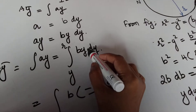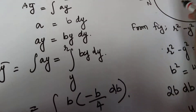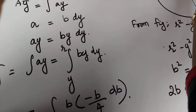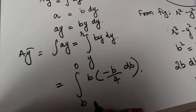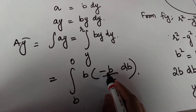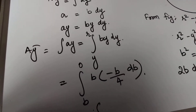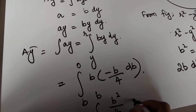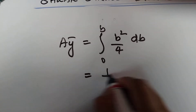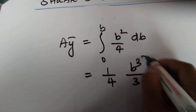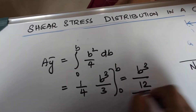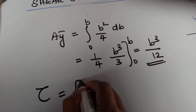Converting from y terms to b terms: when y = r, b = 0 (no width at the top). Changing the limits from b to 0, and removing the negative sign by reversing the limits to 0 to b, we integrate b²/4·db from 0 to b.